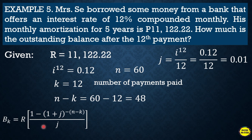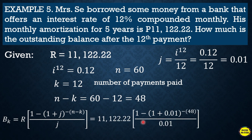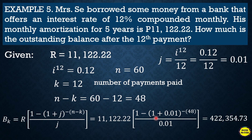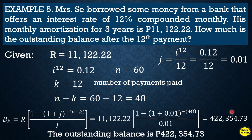To find the outstanding balance, we use the formula: B_k = Regular Payment × [1 − (1 + j)^(−(n−k))] ÷ j. Substituting: 11,122.22 × [1 − (1 + 0.01)^(−48)] ÷ 0.01. Since n − k = 60 − 12 = 48, the exponent is negative 48. The answer is four hundred twenty-two thousand three hundred fifty-four point seventy-three. This is the remaining outstanding balance that Mr. C still needs to pay over the remaining 48 months.